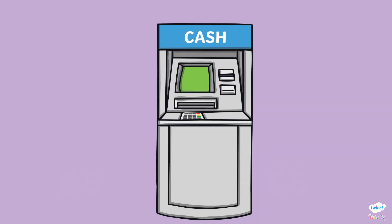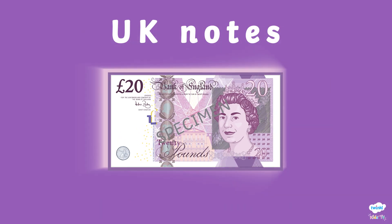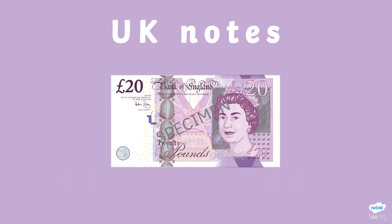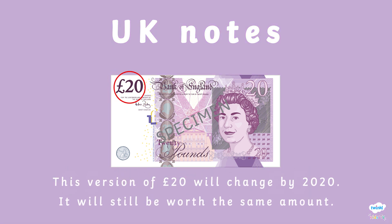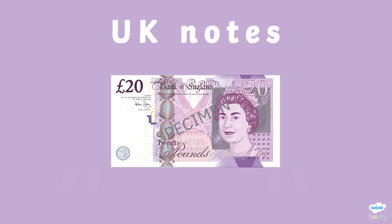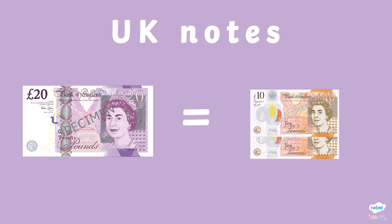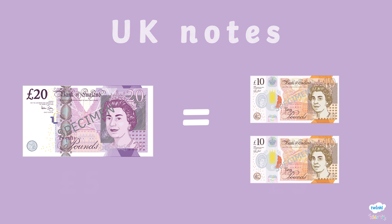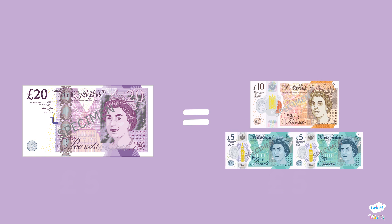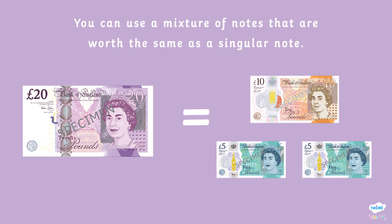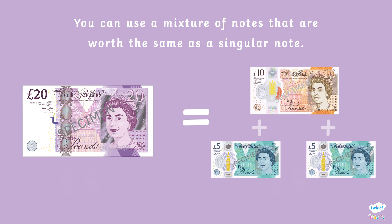What will the cash machine give out next? Look — it's a £20 note! Did you know this version of £20 will change by 2020? However, it will still be worth the same amount. £20 is also the same as two £10 notes. Or it is also worth one £10 note and two £5 notes, as this is the same as writing 10 add 5 add 5, which equals 20. You can mix and match notes to equal an amount.